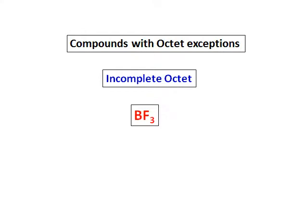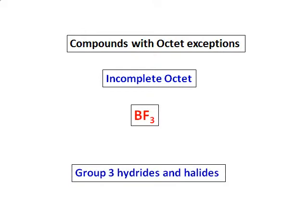Elements of group 3 have only 3 electrons. Therefore, group 3 hydrides and halides, when the group 3 elements combine with hydrogen and halogens, have incomplete octet.